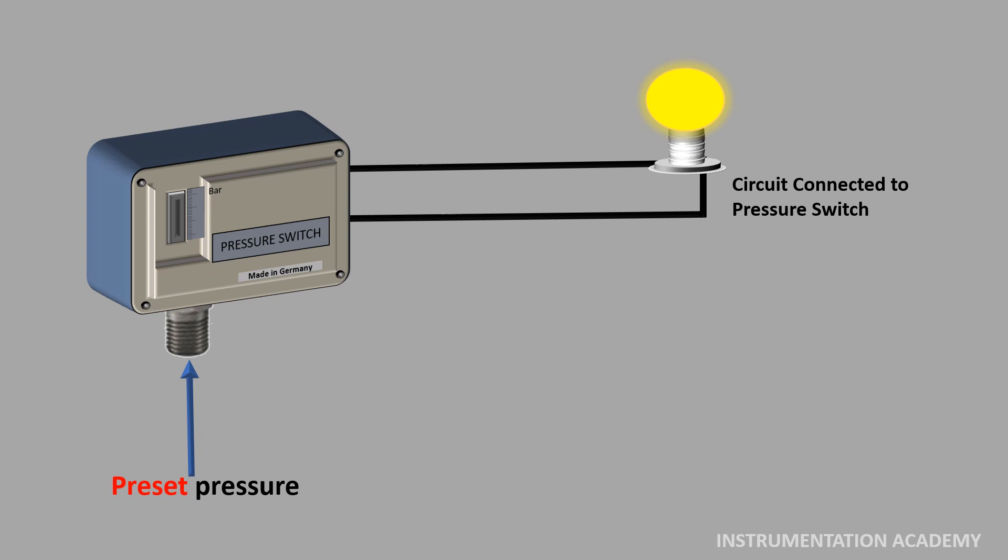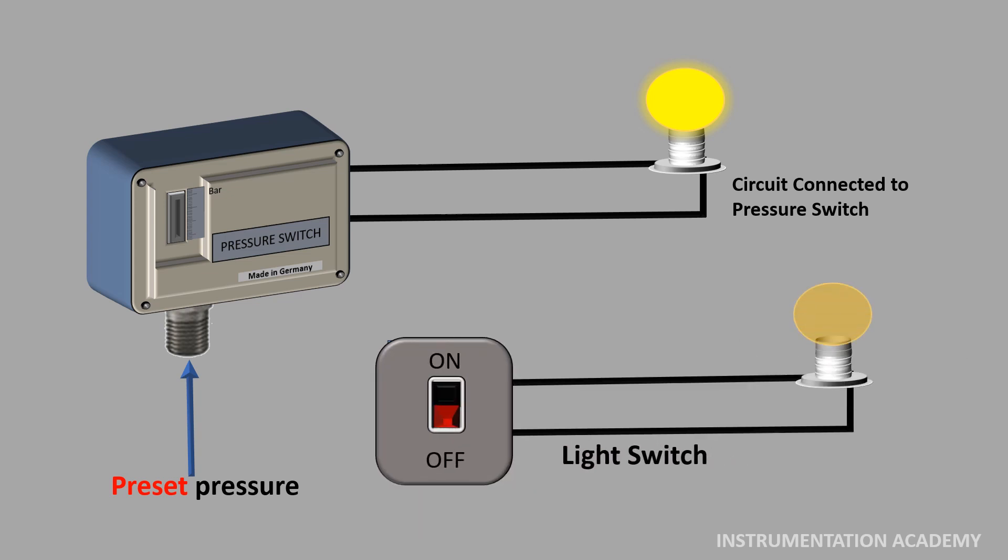The switch may be designed to make contact either on pressure rise or on pressure fall. In the case of a light switch, when they are switched on the switch makes contact, closes the circuit, and the light turns on. When they are switched off the circuit is broken and the power turns off.